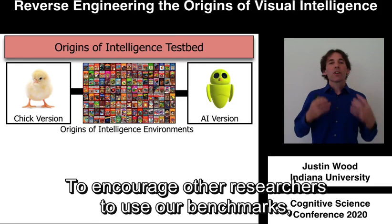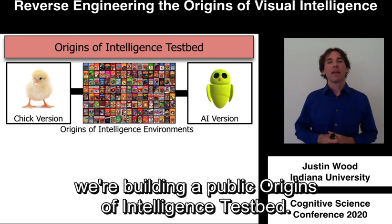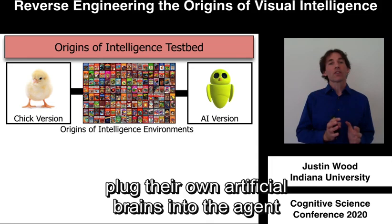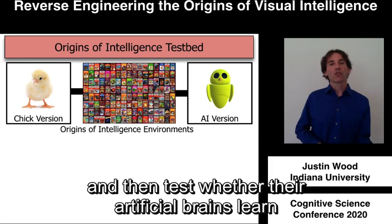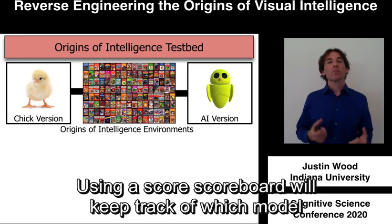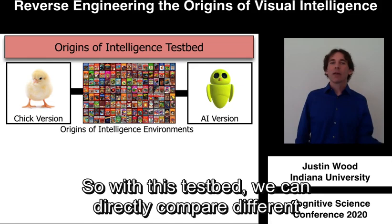To encourage other researchers to use our benchmarks, we're building a public origins of intelligence testbed. Researchers will be able to download our environments, plug their own artificial brains into the agent using the OpenAI gym wrapper, and then test whether their artificial brains learn like newborn brains. Using a scoreboard, we'll keep track of which model best accounts for the development of high-level vision, so we can directly compare different formalized theories of the origins of visual intelligence.